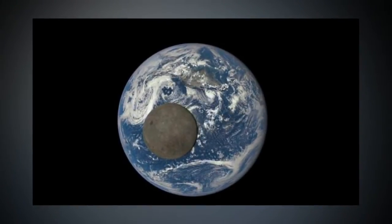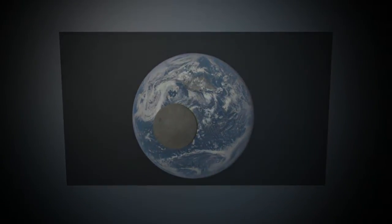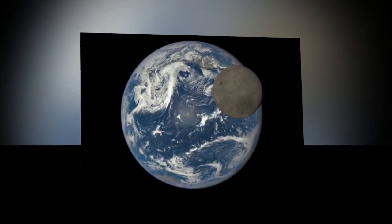A NASA camera aboard the Deep Space Climate Observatory satellite captured a unique view of the Moon as it moved in front of the sunlit side of Earth last month.